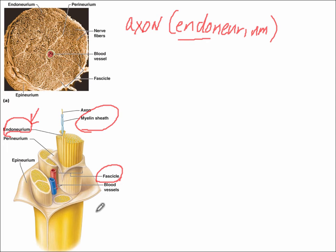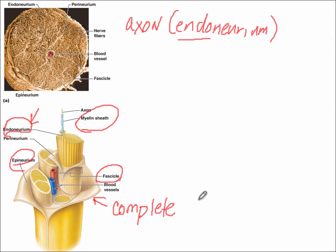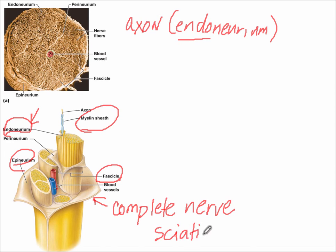Finally, surrounding a complete nerve would be the epineurium. These complete nerves are ones we'll be talking about in the next few slides. One of the largest and thickest nerves in your body is called the sciatic nerve, and it would be surrounded by the epineurium, this important membrane.